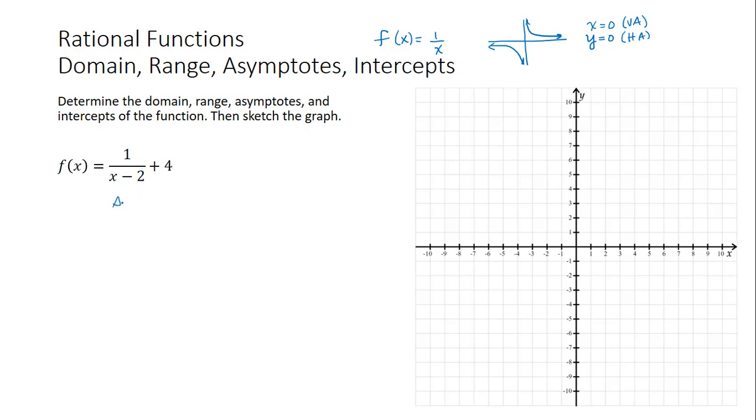And so for 1 divided by x minus 2, that tells us that we're going to shift right 2 units, and then the plus 4 says that we're going to go up 4 units.